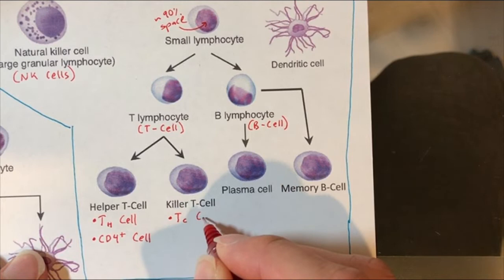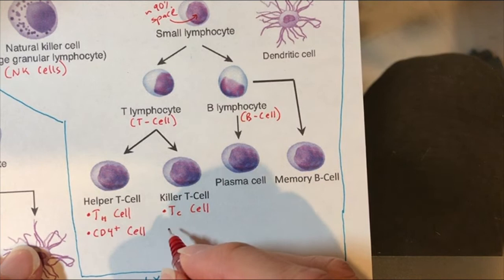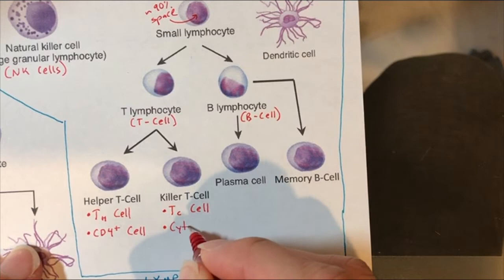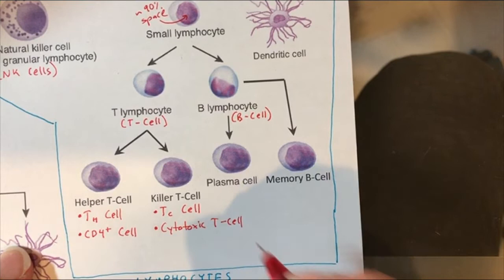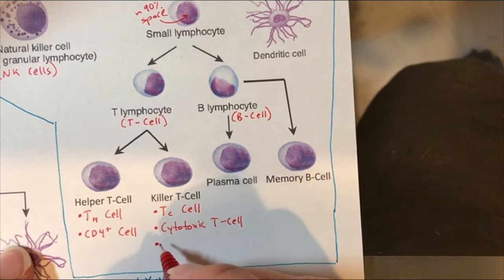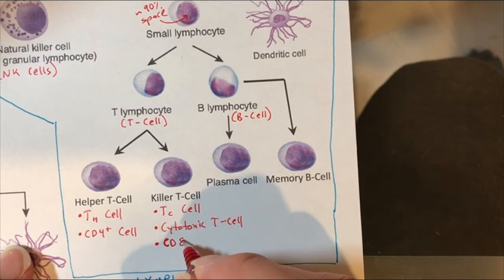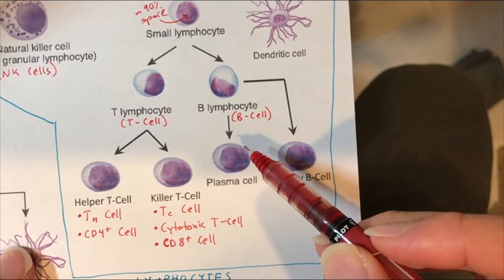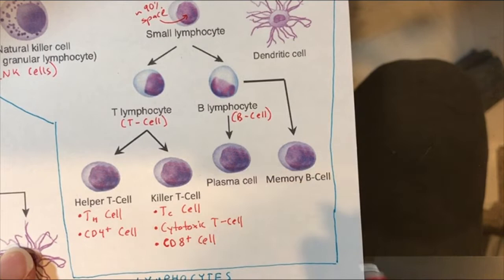The killer T cell can be called the T sub C cell. You might wonder what the C stands for — the reason is that the other name for it is a cytotoxic T cell. Or, similar to the CD4 naming, we can name it based on a receptor found on the cell: a CD8-plus cell. Thankfully, the plasma cell derived from a B cell is just called a plasma cell, and similarly the memory B cell is only called memory B cell.